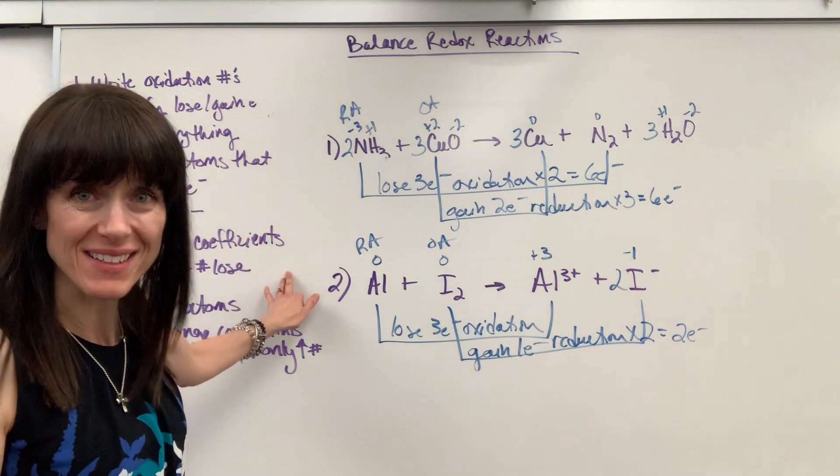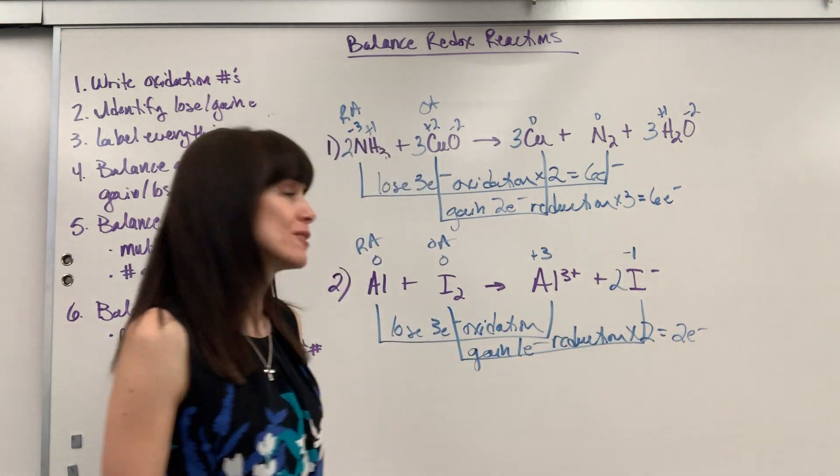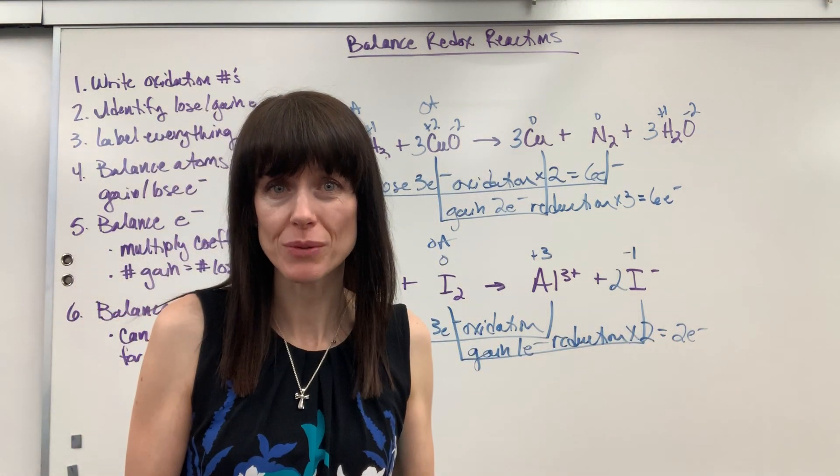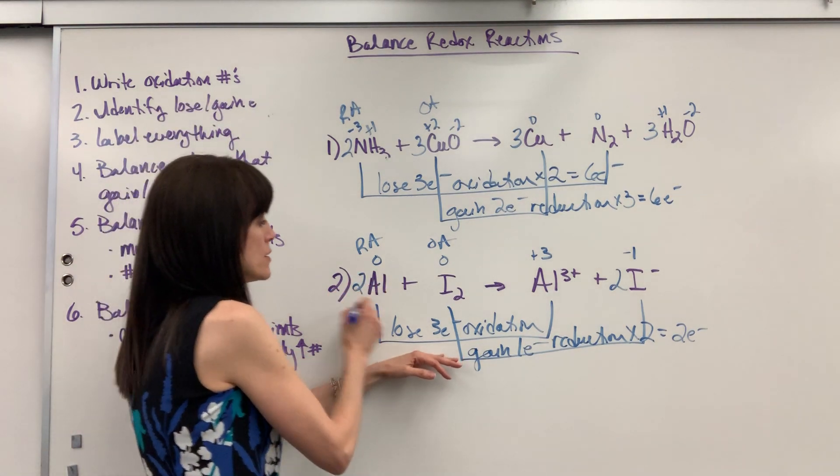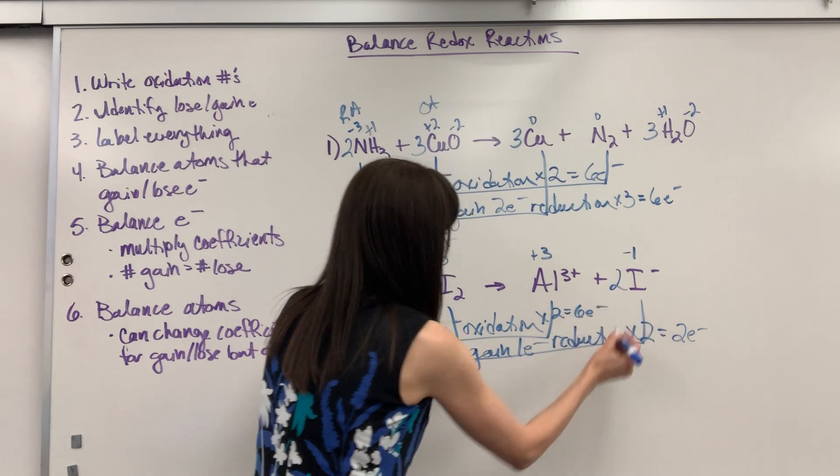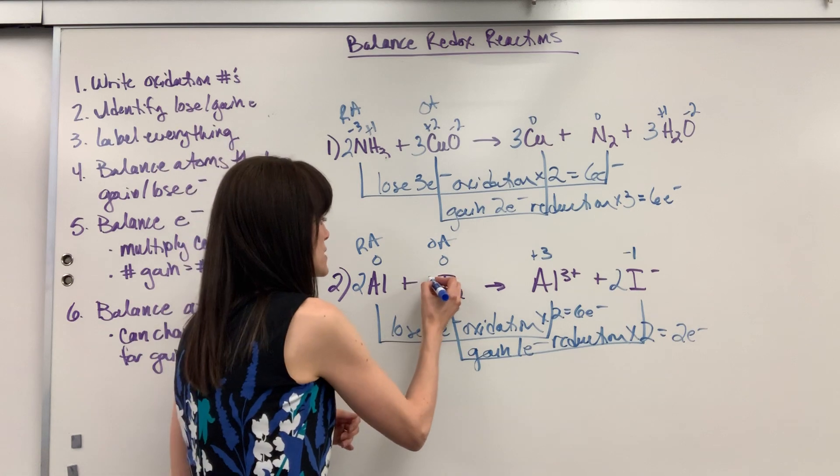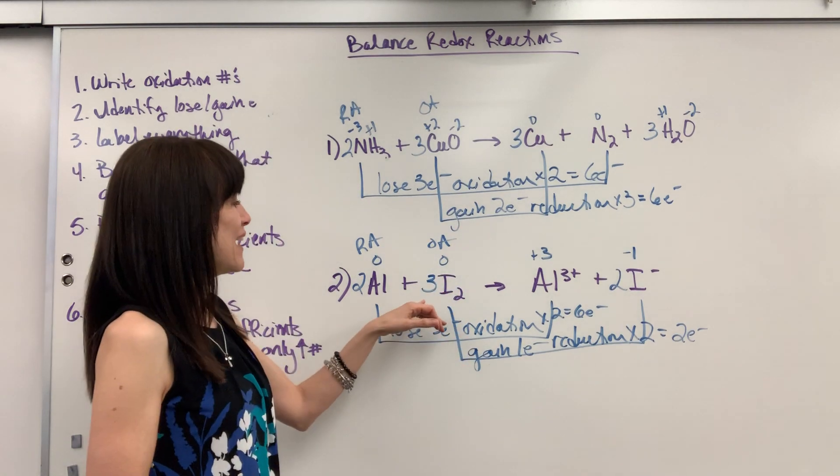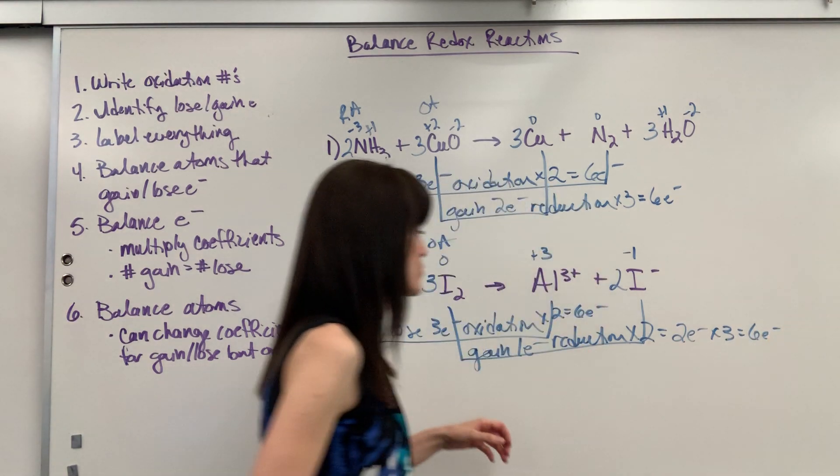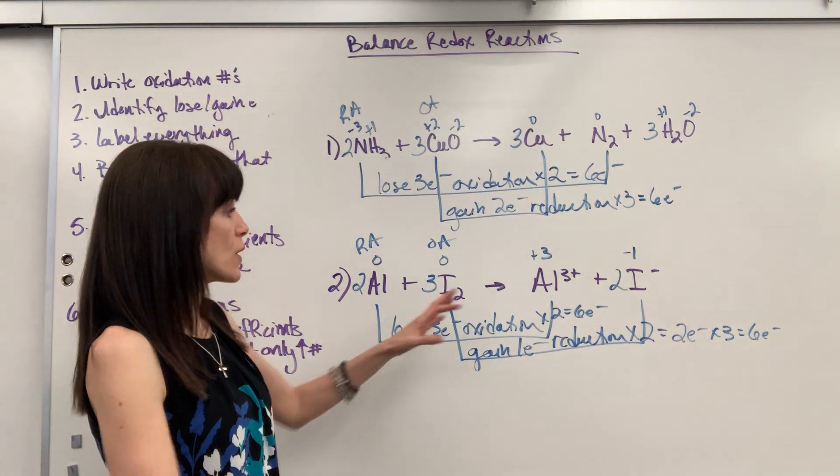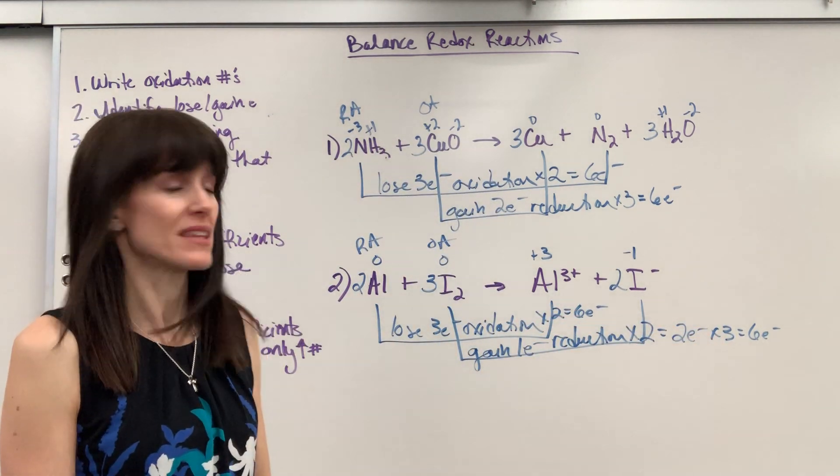Okay, so now we're going to balance the electrons using coefficients. I've got three electrons lost, two electrons gained. What's the smallest number they both go into? Six. So I'm going to multiply aluminum by two. So three times two is going to be six electrons lost oxidized. And then my iodine, we're going to put a three here. Three times two is going to give me six electrons gained reduced. So our electrons, they are balanced.